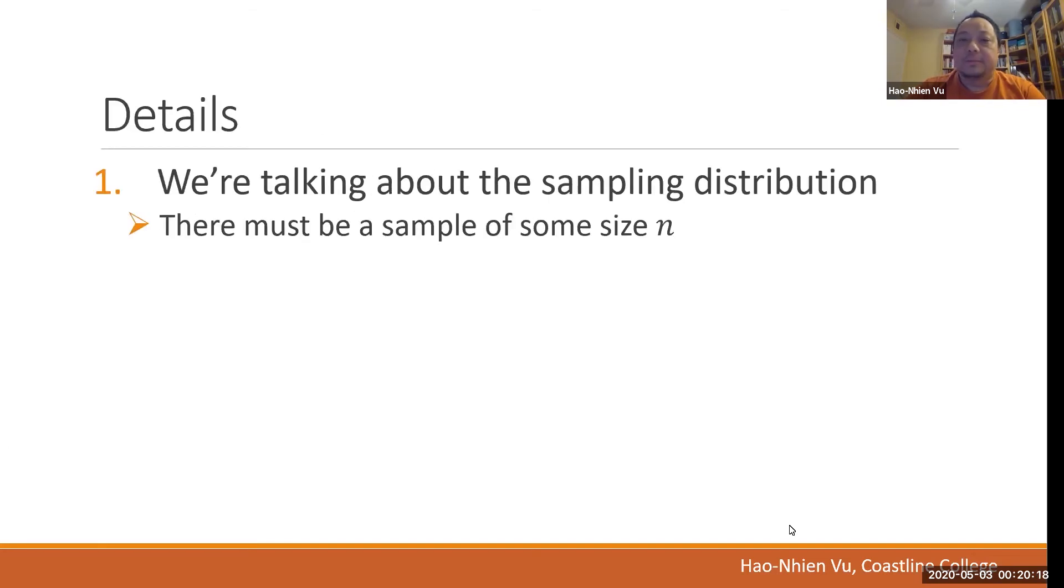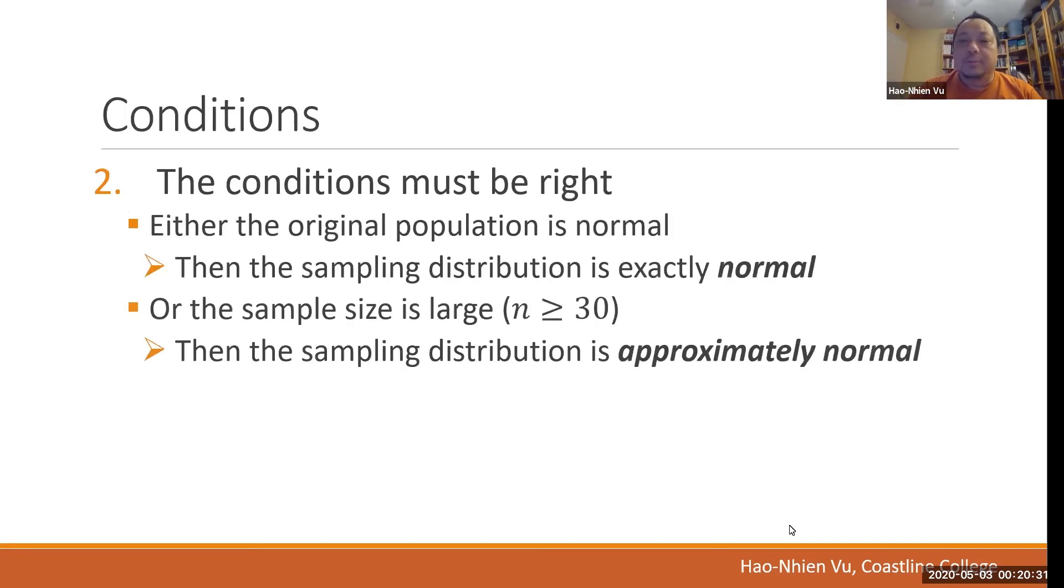Let's dig into the practical details of CLT. First of all, we're talking about the sampling distribution. So there has to be a sample. No sample, no CLT. Number two, the conditions must be right. If the conditions are not met, CLT does not apply. What this says is that when you solve a CLT problem, somewhere in your solution, you must check the conditions.